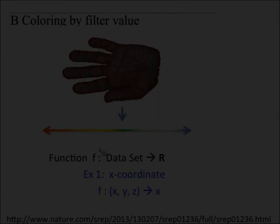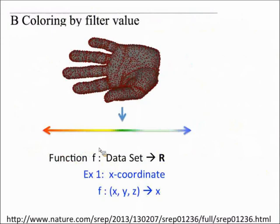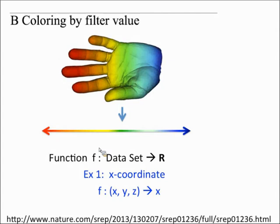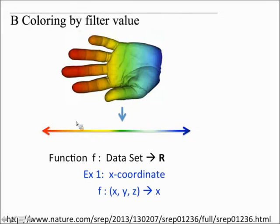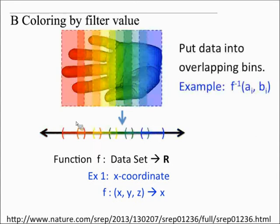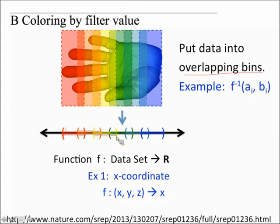We colored the real line and took the pre-image of our data to color it, so now we can see the x-values. But we want to do more than just take the pre-image — we actually want to group our data into overlapping bins. We divide our real line into overlapping intervals, and then for each overlapping interval we take its pre-image and bin the data. So we have a red bin, orange bin, yellow bin, green bin, cyan bin, and blue bin.